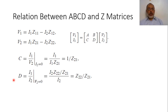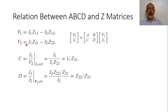For C, we have C = I1 over V2 when I2 = 0. With I2 = 0, V2 = I1·Z21 - I2·Z22 = I1·Z21. Therefore C = I1 / (I1·Z21) = 1/Z21, which has units of admittance.